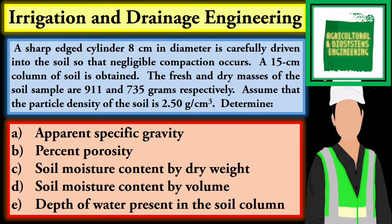In this video, I will show you how to solve this problem under irrigation and drainage engineering. A sharp-edged cylinder 8 centimeters in diameter is carefully driven into the soil so that negligible compaction occurs. A 15-centimeter column of soil is obtained. The fresh and dry masses of the soil sample are 911 and 735 grams respectively. Assume that the particle density of the soil is 2.50 grams per cc. Determine the apparent specific gravity, percent porosity, soil moisture content by dry weight, soil moisture content by volume, and depth of water present in the soil column.